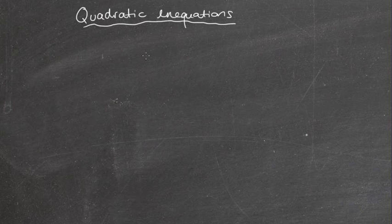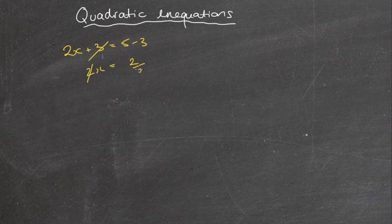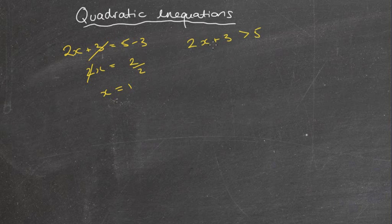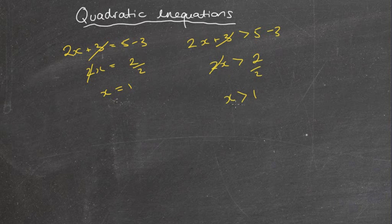Welcome to today's lesson. We'll be looking at quadratic inequalities. We've previously looked at questions like 2x + 3 = 5, where you take the 3 away to get 2x = 2, divided by 2 to get x = 1. We then looked at inequalities like 2x + 3 > 5, where we do the same — take the 3 across, get 2x ≥ 2, and divide by 2 to get x > 1. So those are our normal linear equations and inequalities.